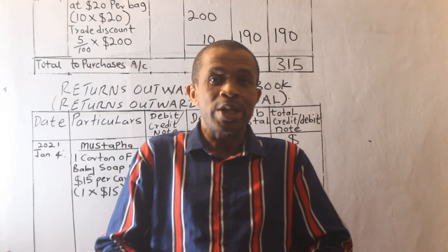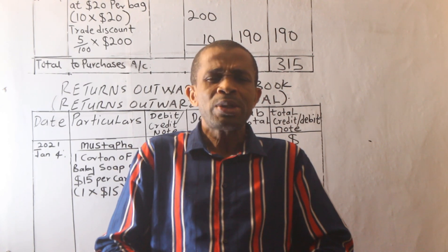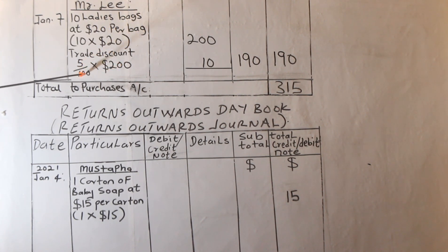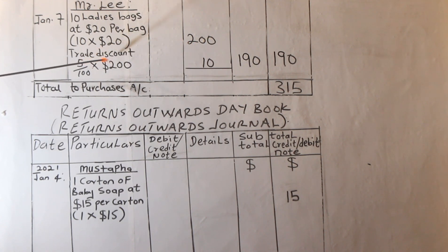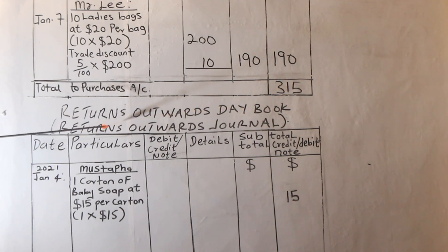So the steps are: firstly, find out who Mr. Lee is — is he a supplier? Secondly, find out what we actually purchased from Mr. Lee, which is ladies' bags. Find out the unit price of each bag. And find out whether there is a discount involved. With this analysis, you can confidently record these transactions in the Purchases Returns Day Book.